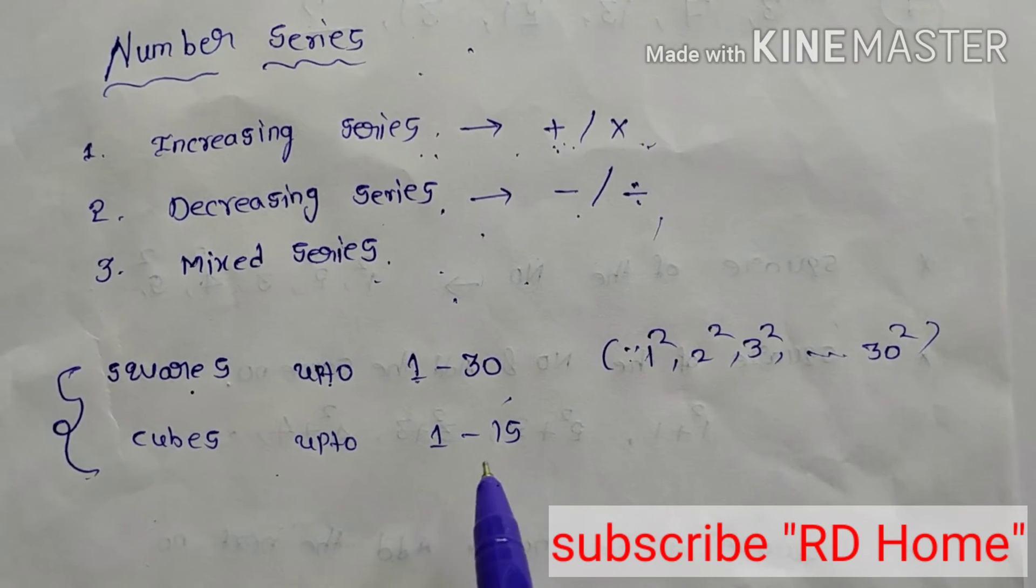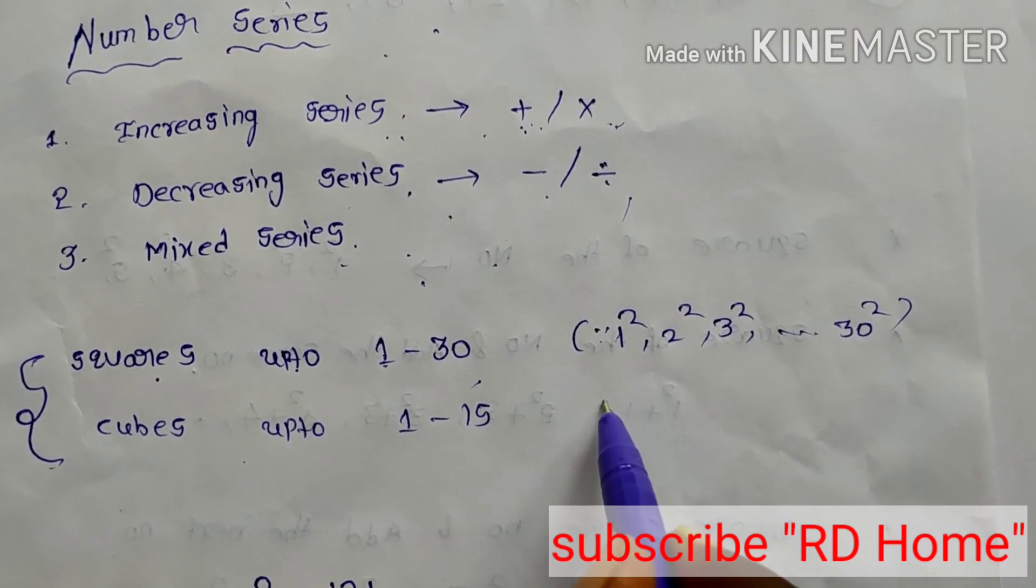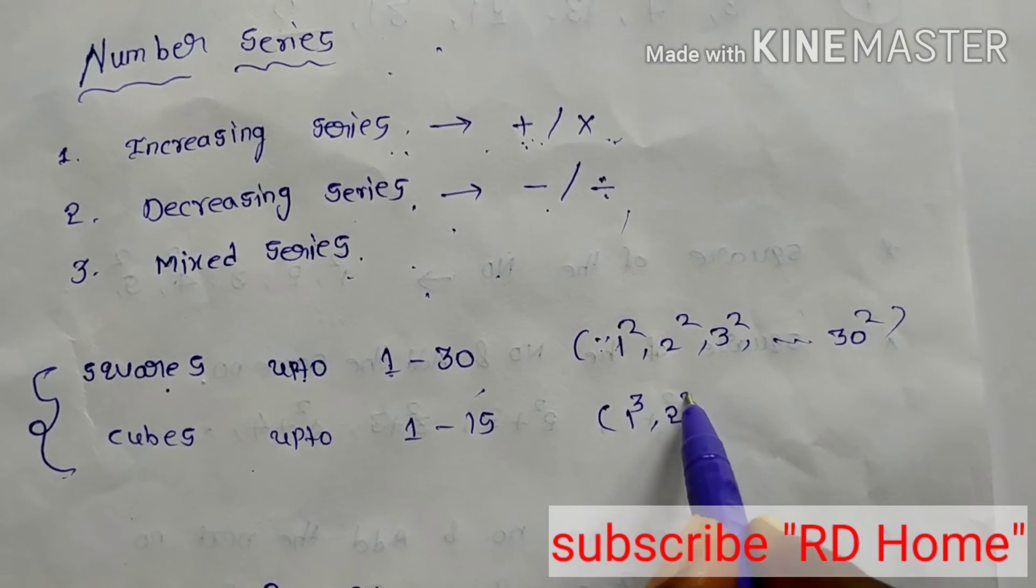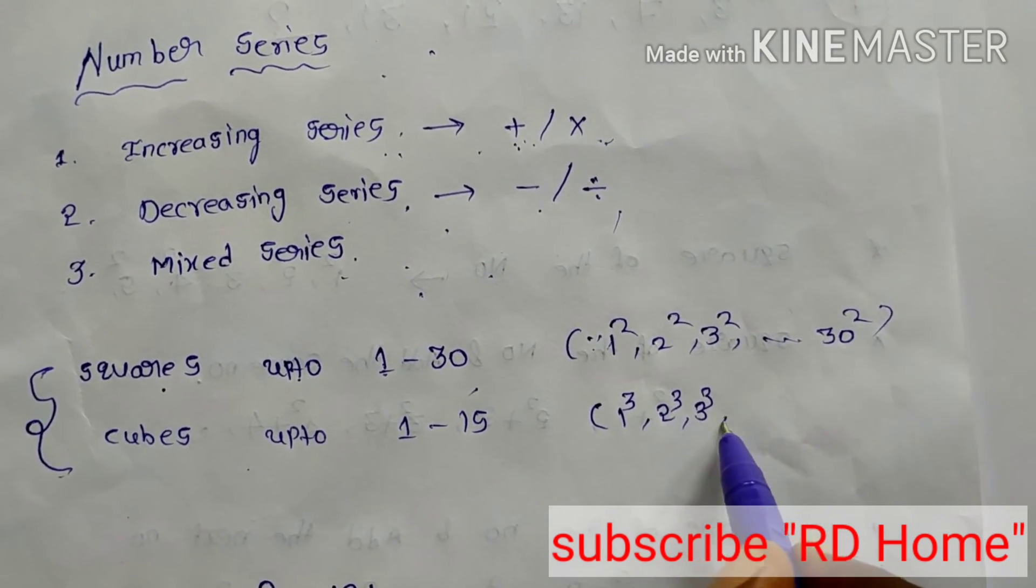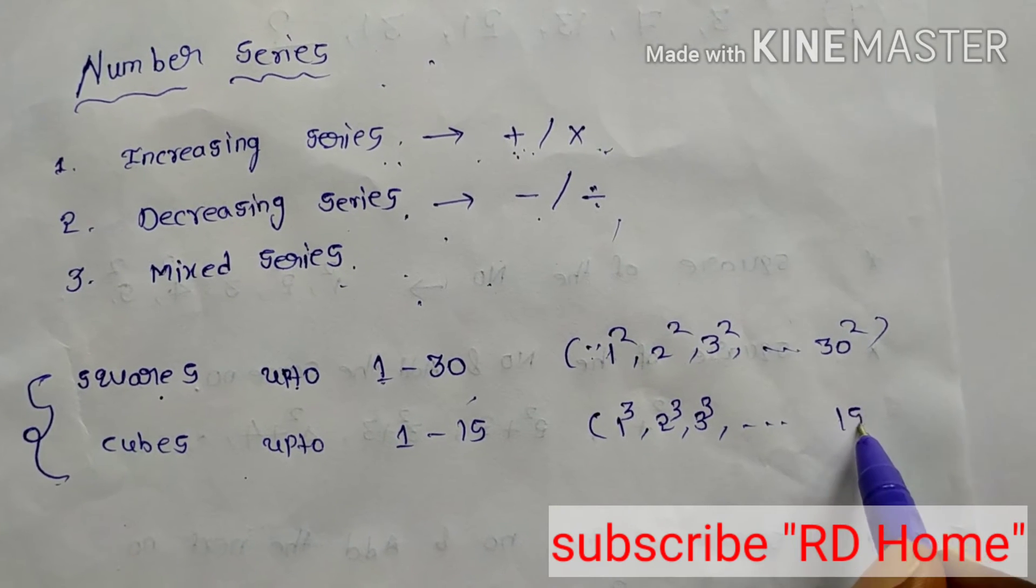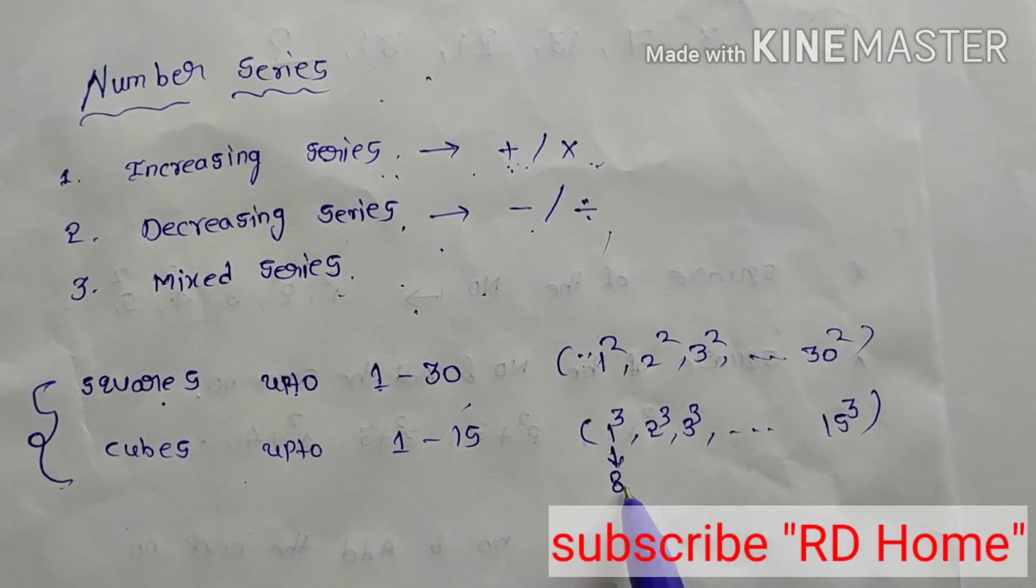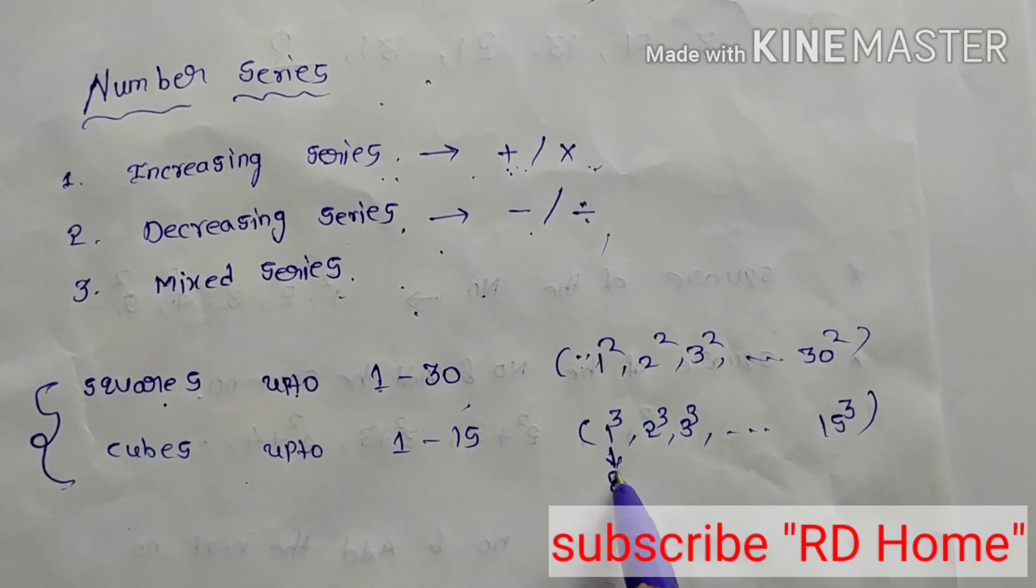Second one, cubes up to 1 to 15. That means 1 cube is 1, 2 cube is 8, 3 cube is 27, 4 cube is 64, like that. If you know cubes from 1 to 15, it is very very time saving. Time is more important in competitive exams.